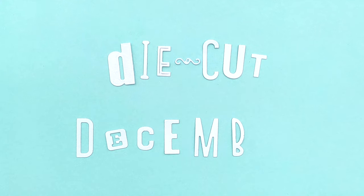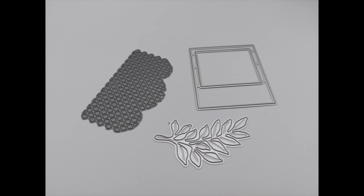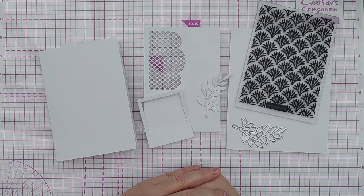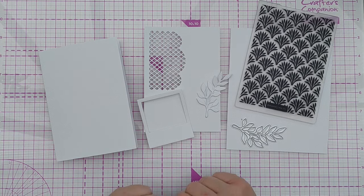Hello crafters and welcome to day eight of die cut December. Today I'm creating a birthday card using these dies. I've got an aperture die, a polaroid type frame die and a branch die. These are the bits and pieces I'm going to be working with today and they're all made from hammered white cardstock.